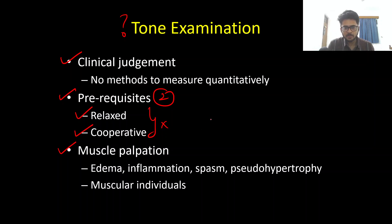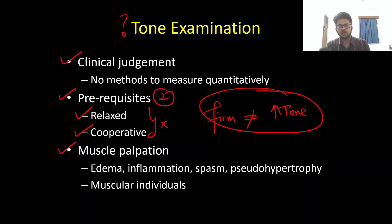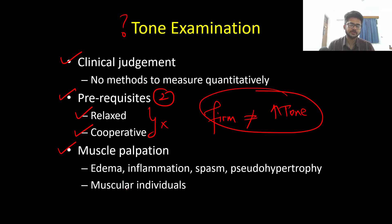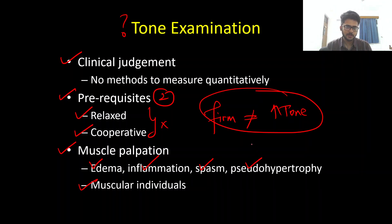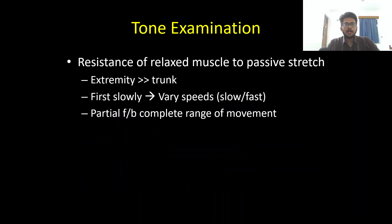Before actually examining tone, it is important to palpate the muscle. However, remember that a firm muscle is not equal to hypertonia. A firm muscle on palpation is not equivalent to an increase in tone or spasticity. A firm muscle can be present in normal individuals — patients who are very athletic and muscular can have muscles that feel pretty firm on palpation.